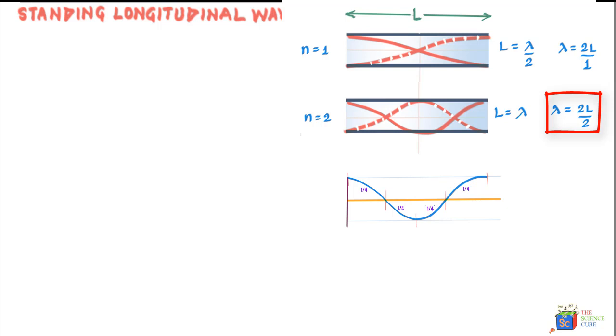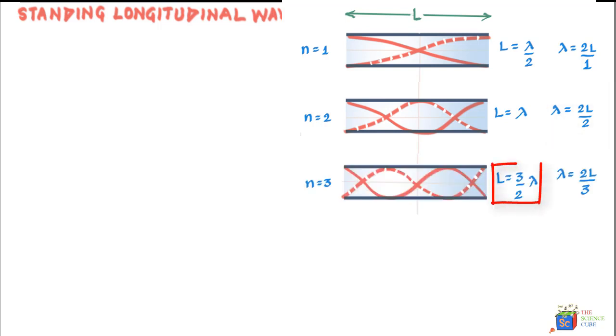Now, the third harmonic requires L equal to 3 by 2 lambda because you can see here that you have one full wavelength and then you have another half a wavelength and therefore 1 plus half is equal to 3 by 2. So, lambda should equal to 2L upon 3 and so on. Well, you see a nice pattern here where higher harmonics can be created as long as lambda is equal to 2L upon n for n equal to 1, 2, 3, 4 and so on and so forth.